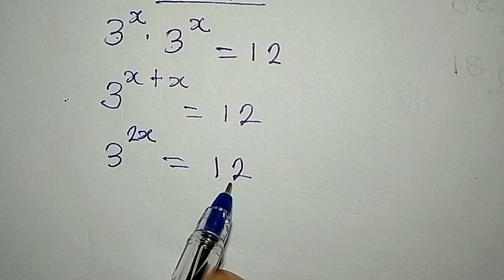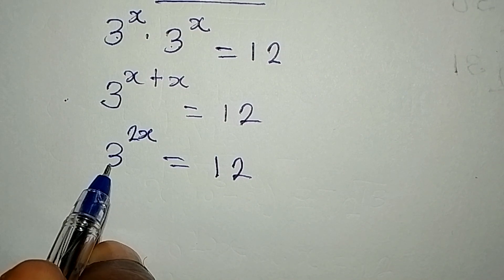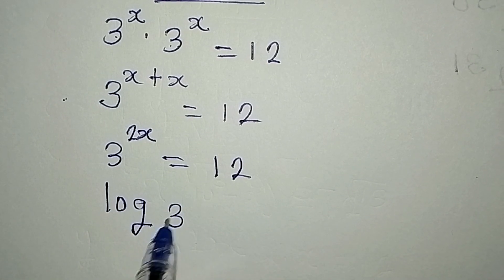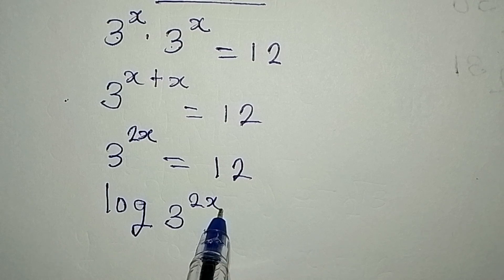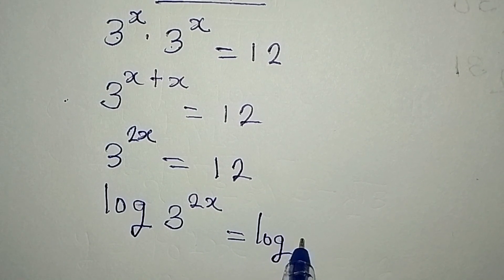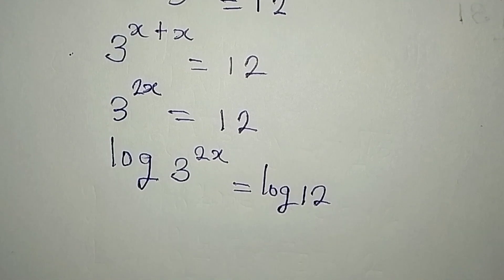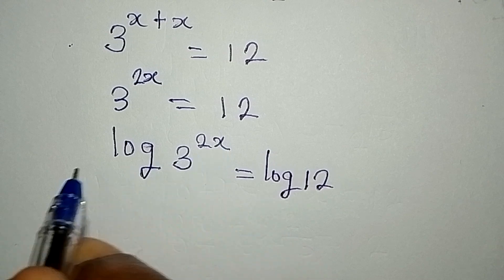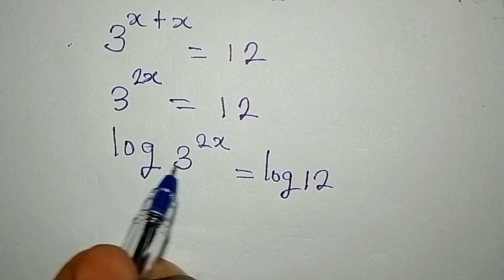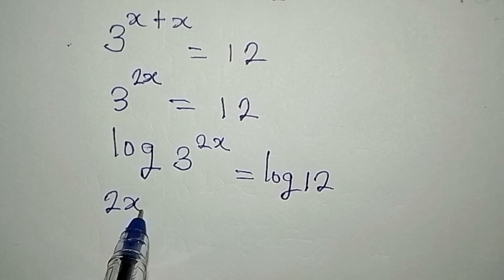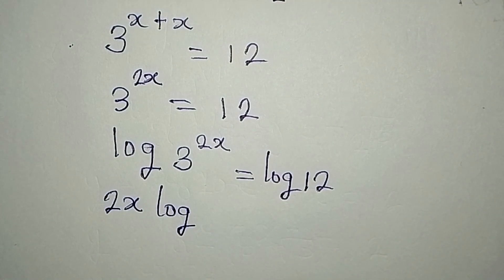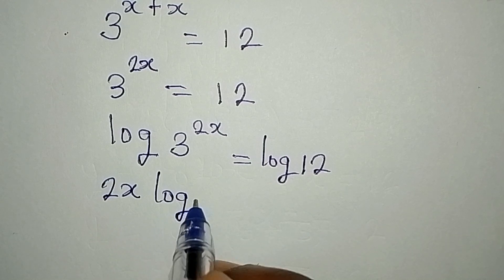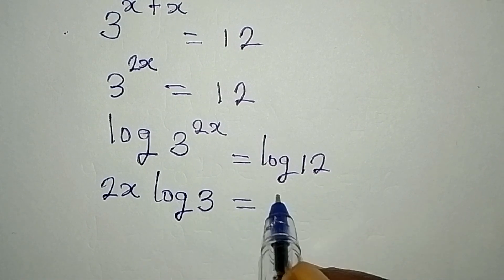At this point we cannot express 12 with 3 as the base, but we can decide to take the log of both sides. So we take log of 3 to the power of 2x which is equal to log 12. From here, the powers can come down to multiply, so we have 2x multiplied by log 3, and this is equal to log 12.